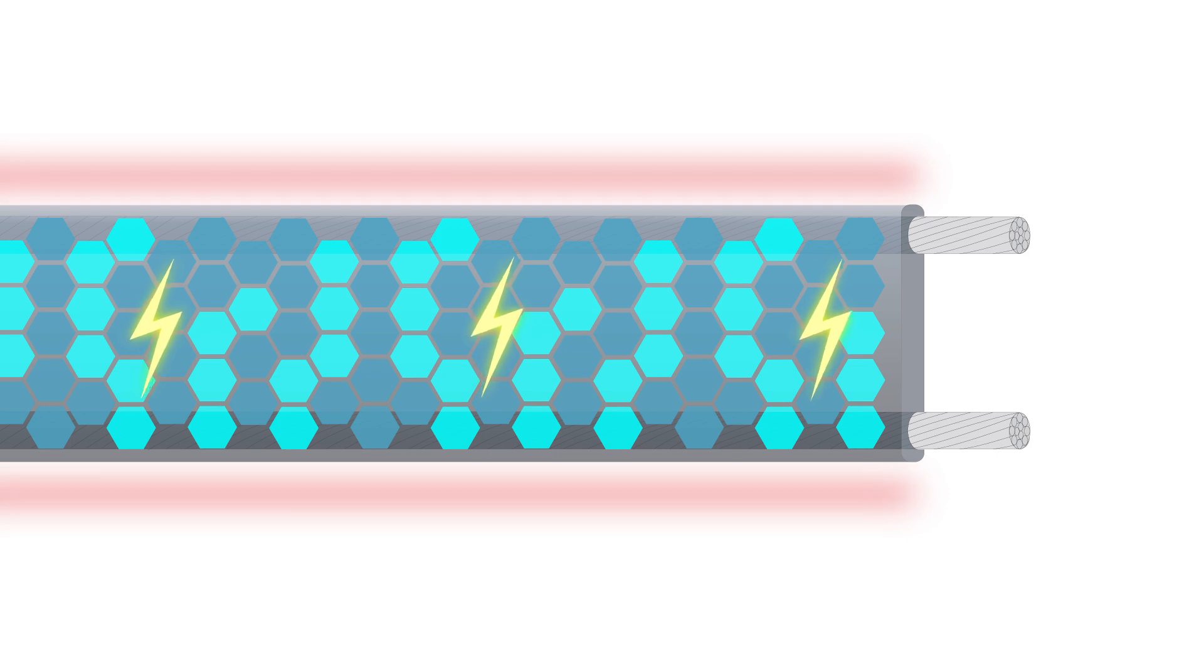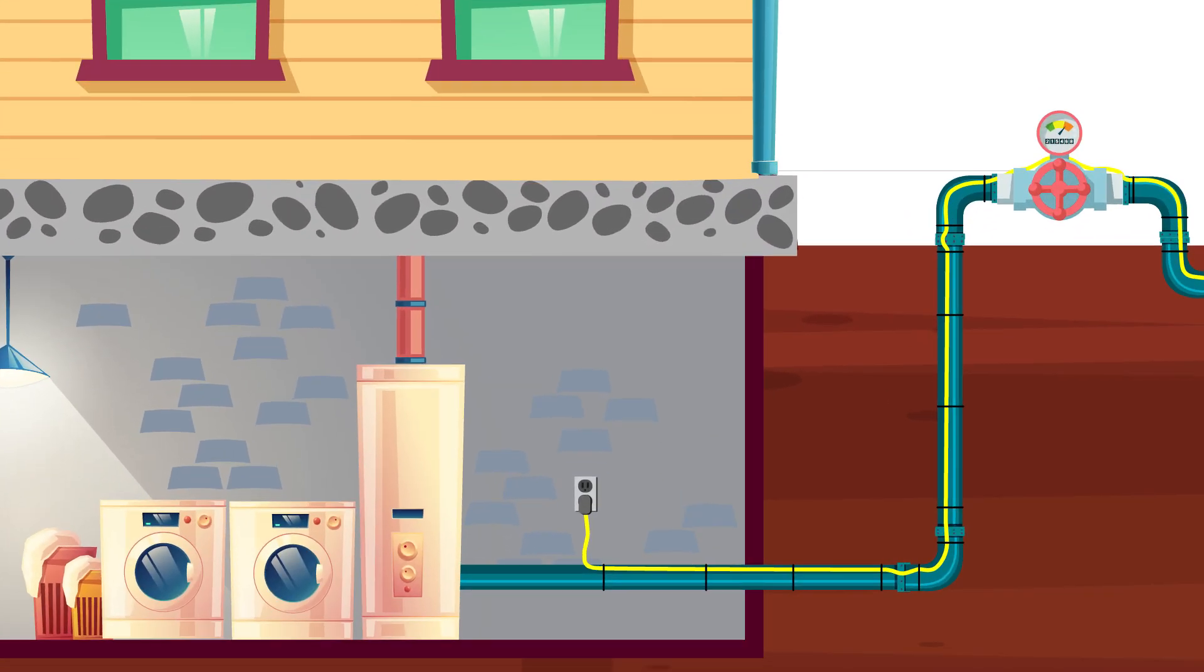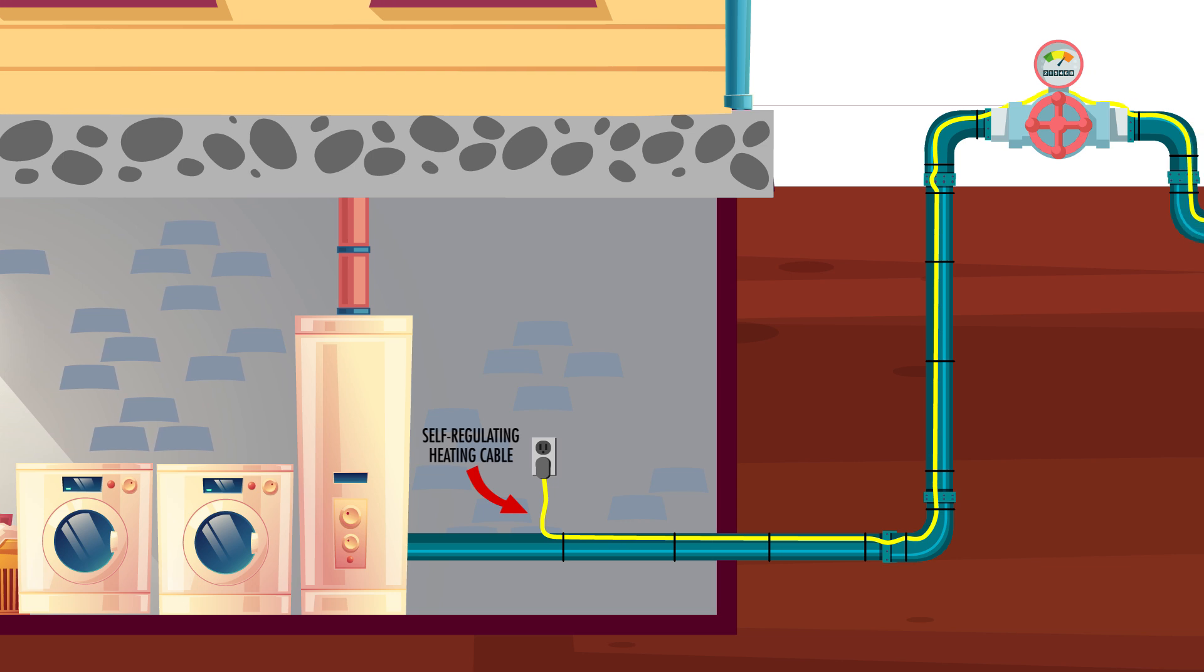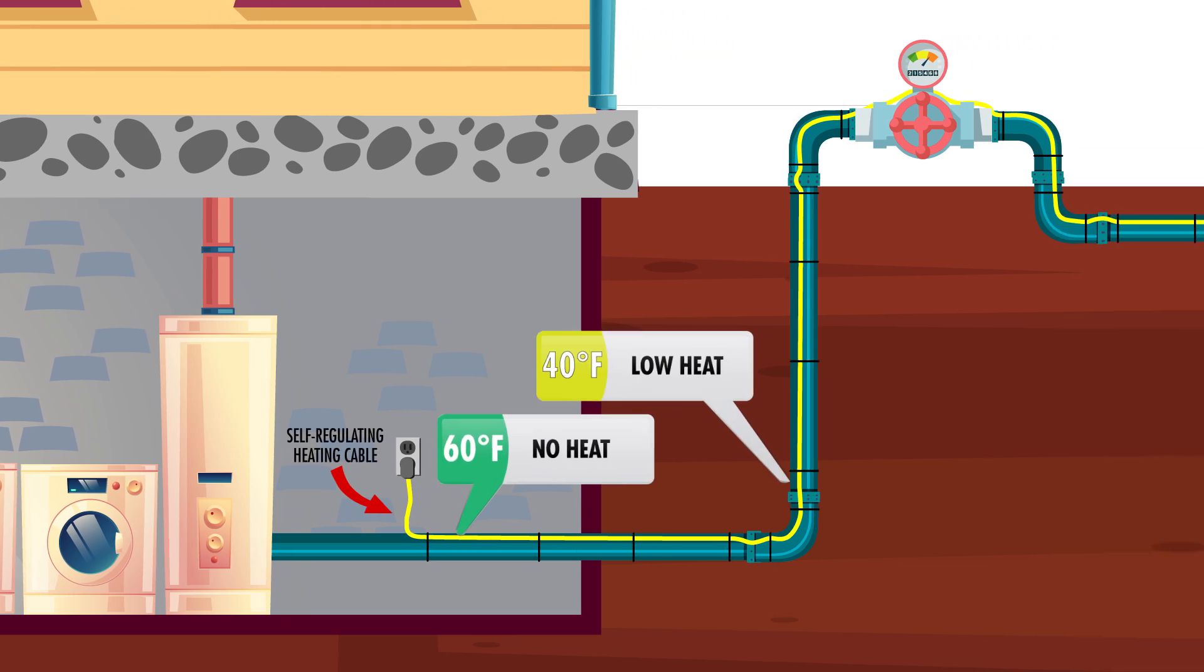A big advantage to this design is that in longer runs where heating cable may be exposed to varying ambient temperatures along the way, self-regulating cable can provide variable heating wherever and whenever it's needed along the entire run.